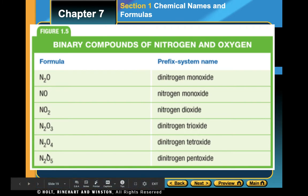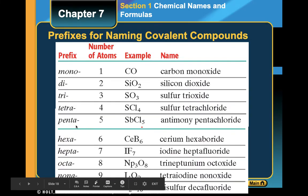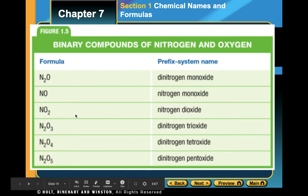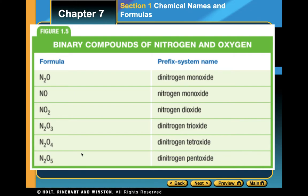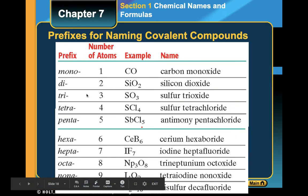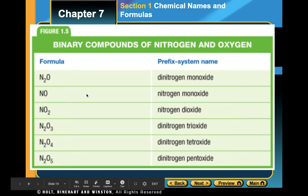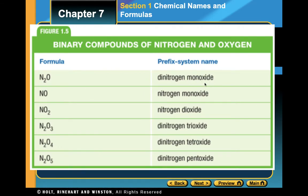Then we have two nitrogens and five oxygens, so it's dinitrogen — and if you don't know what five is, penta — pentoxide. Do you get the idea? It's basically the same thing, just repeating over and over again: find the correct prefix, give the right name, and remember to change the very end of your second element's name to 'ide'.